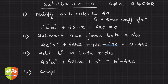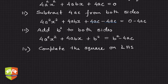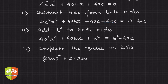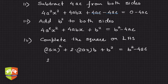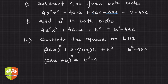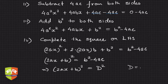Hence, complete the square on the LHS. We see it is (2ax)² + 2·(2ax)·b + b², which equals b² minus 4ac. So the left-hand side is nothing but (2ax + b)² = b² − 4ac.